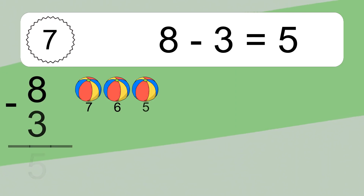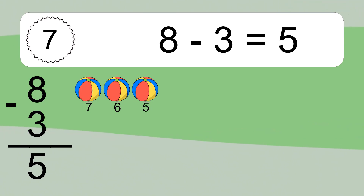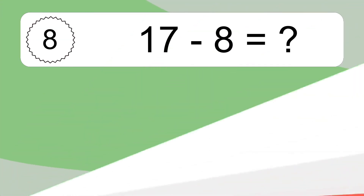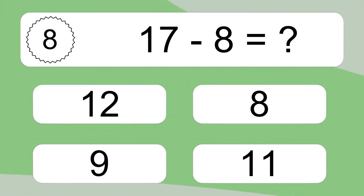8 minus 3 equals what? 8 minus 3 equals 5. Let's count it: 7, 6, 5.